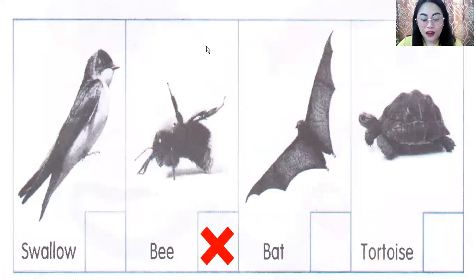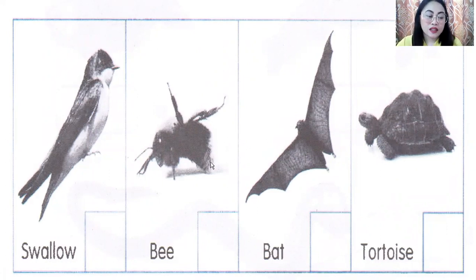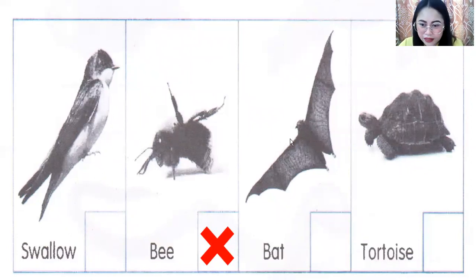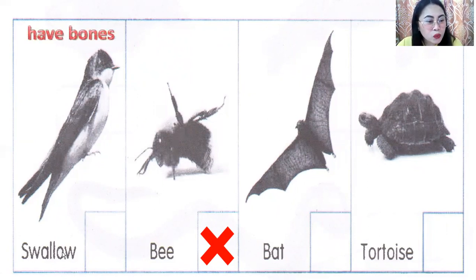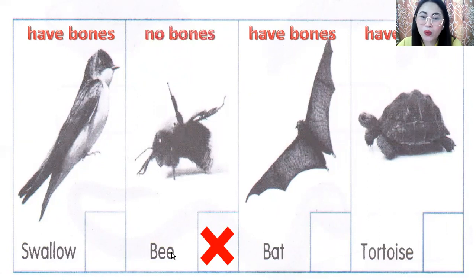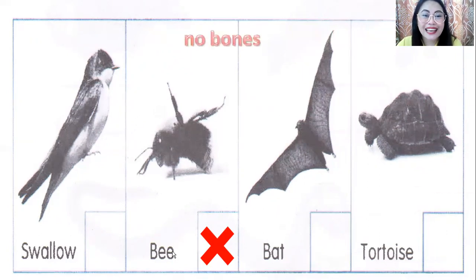Next, which animal does not belong in the group? We have swallow, bee, bat, and tortoise. The answer is bee. Swallow, bat, and tortoise all have bones, while bee has no bones — that's why bee is the correct answer.